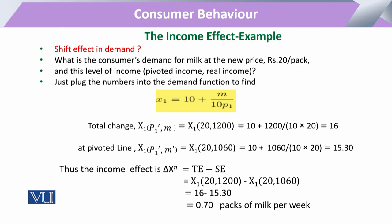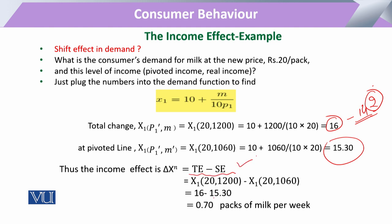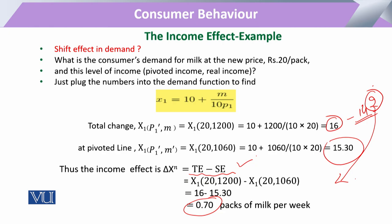We calculate this, and after this we calculate the substitution effect, which we had already calculated as 1.3. The total change was 2 — from 16 minus 14. So from the total effect of 2, we subtract the substitution effect of 1.3, and we are left with 0.7, which is the portion of the total change contributed through the income effect.